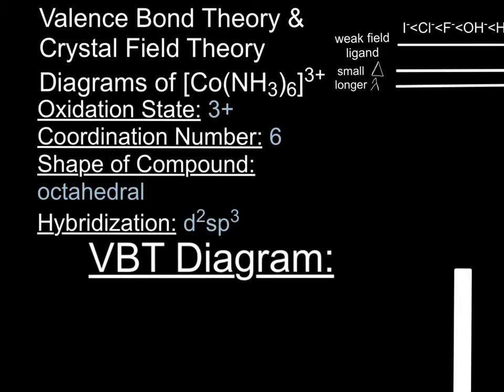First, it is important to identify the components that make up a coordination compound. In regards to the oxidation state, it is shown by the charge, which in this case is 3+. The coordination number is the number of atoms that can be attached to the metal, and the coordination number here is 6.